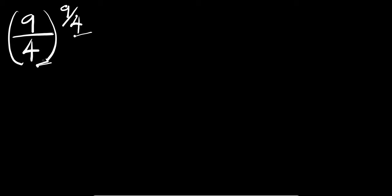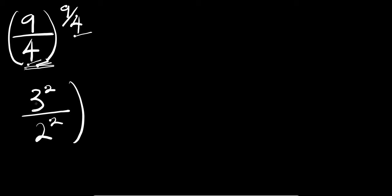We have 9 divided by 4 here, and 9 is a perfect square so you can have it as 3 to the power of 2, divided by 4, which is also a perfect square you can have as 2 to the power of 2, and this is all to the power of 9 divided by 4.